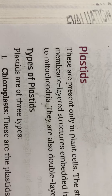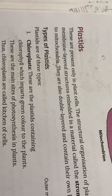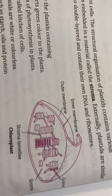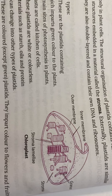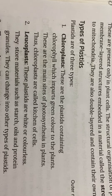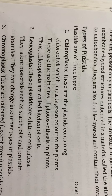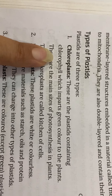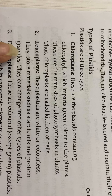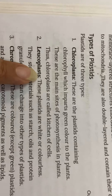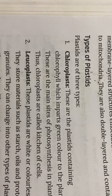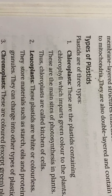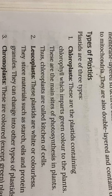The next organelle is plastids. Plastids are cell organelles that are present only in the plant cell; they are absent in the animal cell. Plastids are present in the leaves and are of three types. The first is chloroplast, which contains the chlorophyll pigment and helps in the process of photosynthesis. Chloroplasts are the main site of photosynthesis in plants and are also called the kitchen of the cell.